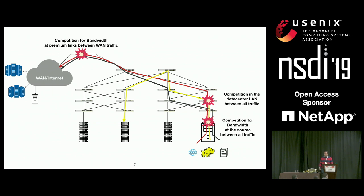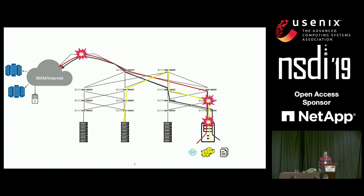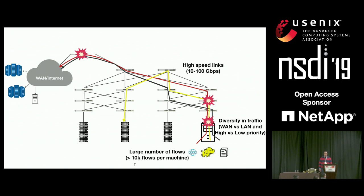These are all classical problems that we've been working on for years. However, what keeps these problems alive is the scale at which current networks are operating. Current servers can be serving tens of thousands of flows, and current links can be operating at very high speeds, giving a very small time budget per packet. There is also diversity in both types of traffic and the policies needed to mandate their interaction.